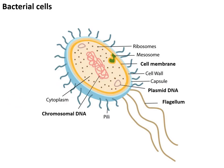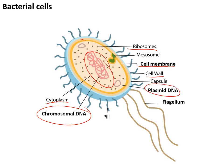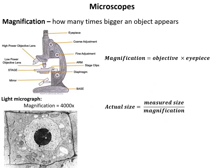Bacterial cells have many of the normal features of a cell including ribosomes, a cell membrane, a cell wall, and cytoplasm. However, they do not have a nucleus. Instead they have their DNA as chromosomal DNA — a large piece — and plasmid DNA, a much smaller piece. Some bacteria also have flagella to help them move.